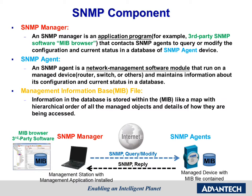A computer network system that uses SNMP for network management consists of three fundamental components: SNMP manager, SNMP agent, and management information base file. As the picture shown here, the SNMP manager is an application program, and it will send SNMP requests to SNMP agents. Then the SNMP agent will reply to the SNMP manager for the request command. The SNMP agent is a network management software module, and it has the MIB file contained inside the module.